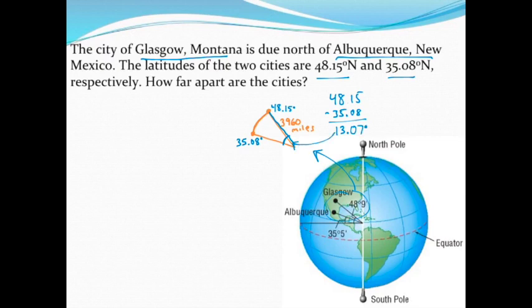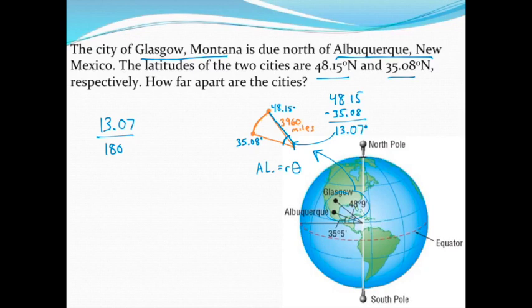Now remember, for our formula to work — arc length equals the radius times theta, the angle — that angle must be measured in radians. So even though we know the angle is 13.07 degrees, I need to convert that into radians. The way we do that is divide by 180 and then multiply by pi. This whole thing is going to be a decimal approximation, so multiplying by 3.14, I get a radian measurement of approximately 0.23 radians.